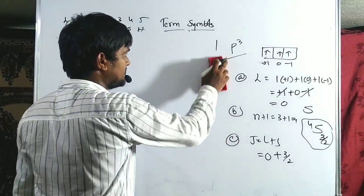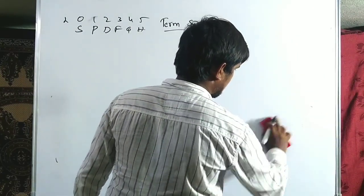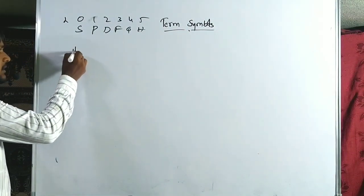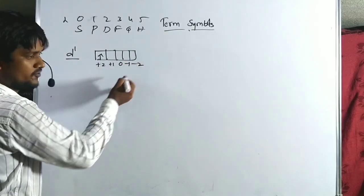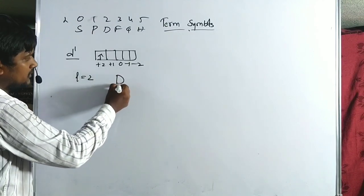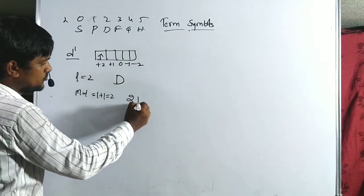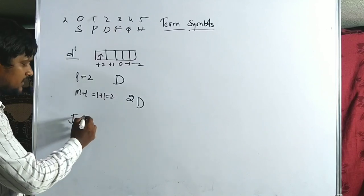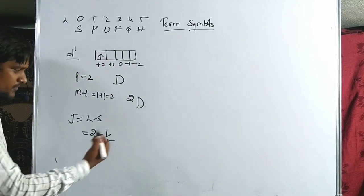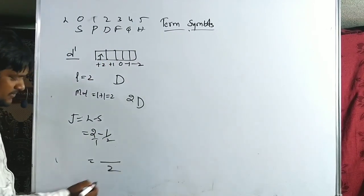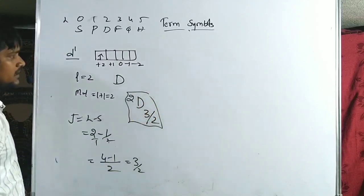For D configurations: D1 has one electron with ML = +2. L = 2, so the term is D. Spin multiplicity = 1+1 = 2, giving 2D. Less than half-filled, so J = L−S = 2−1/2 = 3/2. The ground term symbol for D1 is 2D(3/2).